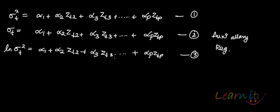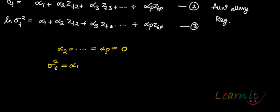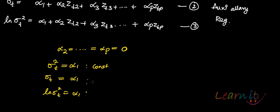Why are we doing this? Look at any of these three auxiliary regressions. If alpha_2 through alpha_p are all equal to zero, what would be left? Sigma squared_t would equal alpha_1, sigma_t would equal alpha_1, and log of sigma squared_t would equal alpha_1 — all constants. If sigma squared_t is a constant, that means there is no problem of heteroscedasticity; it's actually a homoscedastic error variance.